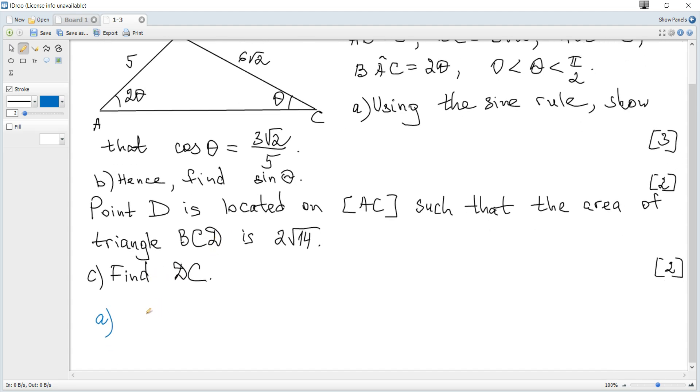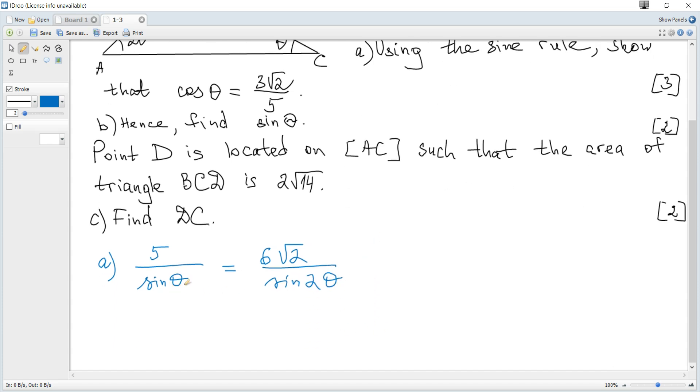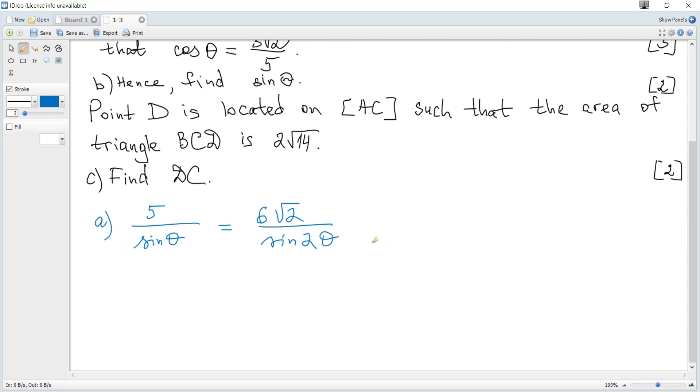So we can write that 5 over sine of theta equals 6 times root 2 over sine of 2 theta. 2 theta is a double angle with respect to theta, and the formula for sine of 2 theta is given in the data booklet: it's 2 times sine of theta times cosine of theta.